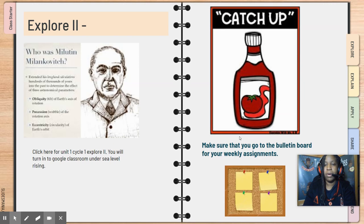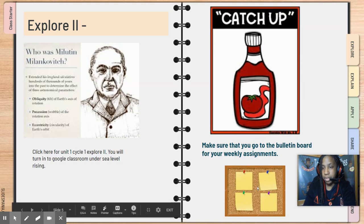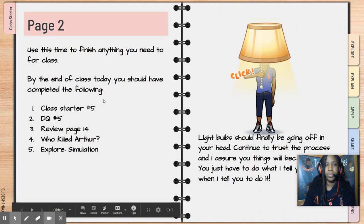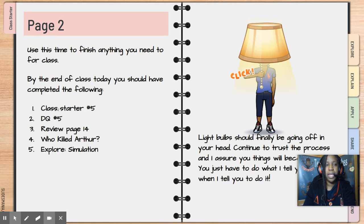If we have time, we'll start working on a simulation to help us further understand his work and contributions to science. Remember, if you finish anything early, catch up. Don't forget to go to the bulletin board — it tells you what you need to turn in. By the end of class today, we'll finish class starter five, daily quiz five, review page 14, look at 'who killed author,' and begin the explore and research.